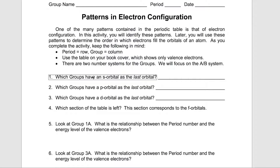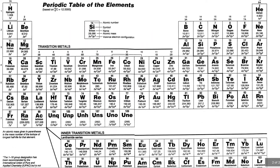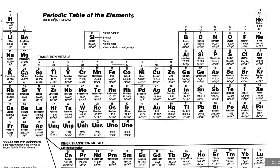In the orbital designation, the very first thing we have here is: which groups have an S orbital as the last orbital? We go down here and the very first element we look at is hydrogen — it has an S orbital with one electron in it. Beryllium has an S orbital with two electrons. Magnesium has an S orbital with two electrons. Potassium has an S orbital with one electron. So these two groups have the last electrons in the S orbital.